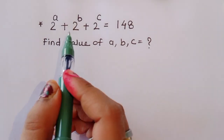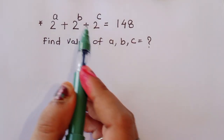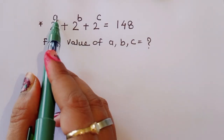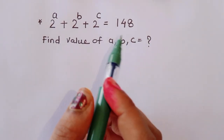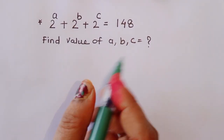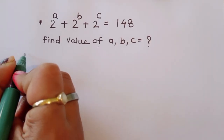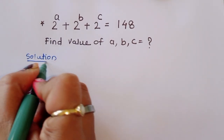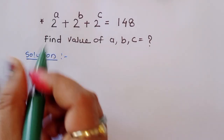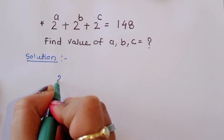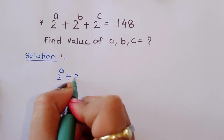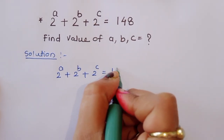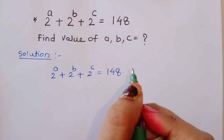The question is: given 2 power A plus 2 power B plus 2 power C is equal to 148, we have to find out the value of A, B, and C. Let's see the solution.